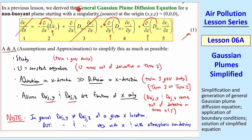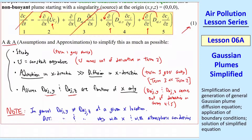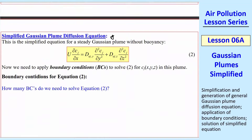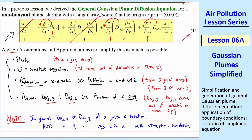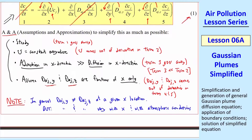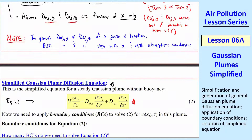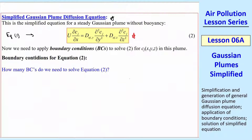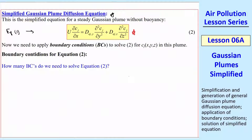When we put these four assumptions and approximations back into equation 1, we get the simplified Gaussian plume diffusion equation. Equation 1 reduces to this simplified form — we got rid of term 3, moved coefficients out of the derivatives, and eliminated term 1, the unsteady term. So that's a much simpler equation, which I'll call equation 2, the simplified Gaussian plume diffusion equation.